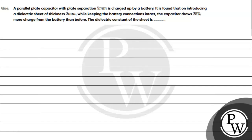A parallel plate capacitor with plate separation 5 mm is charged up by a battery. On introducing a dielectric sheet of thickness 2 mm while keeping the battery connection intact, the capacitor draws 25 percent more charge from the battery than before. Find the dielectric constant of the sheet.